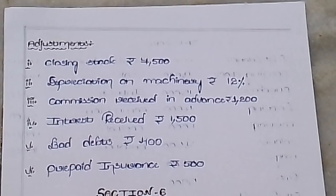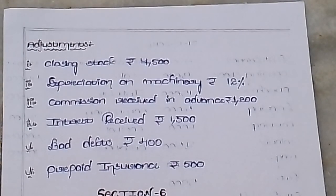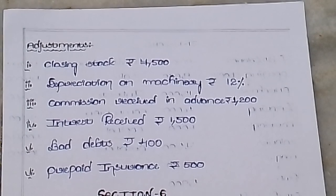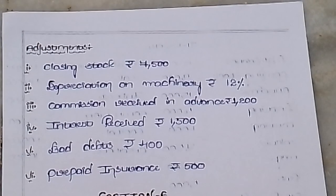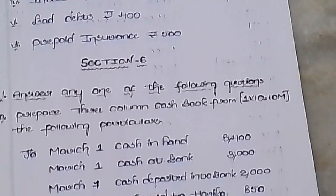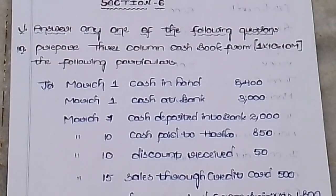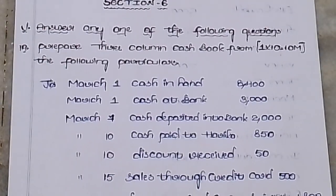Adjustments: closing stock 7,500; depreciation on machinery 12%; commission received in advance 1,200; interest receivable 1,500; bad debts 400; prepaid insurance 500.